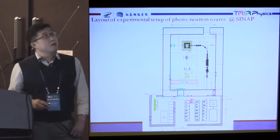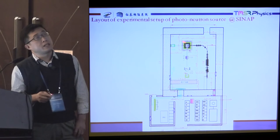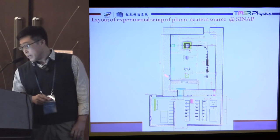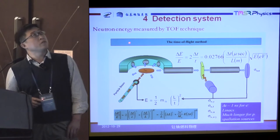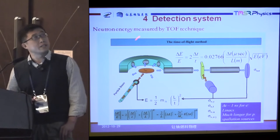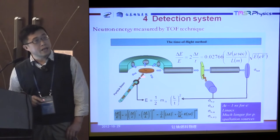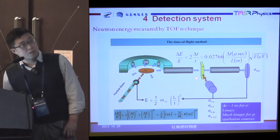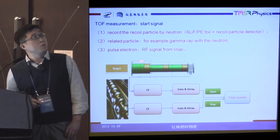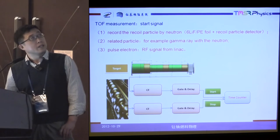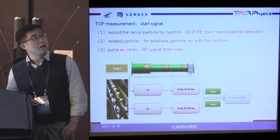This picture shows the layout of the experiment setup of photoneutron source at CNAF. This part is the electron linac, this part is the neutron target, and this part is the experiment zone. We use the TOF technique to measure the neutron energy. So the particle beam bombards the target, and we measure the TOF from the target to the experiment sample position. The TOF measurement requires a start signal. We have three methods to get the start signal. First, we will use the high-frequency signal from the linac as a pulsed electron signal, then we will try other methods.